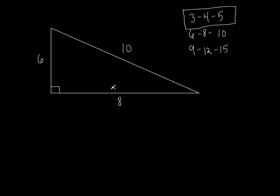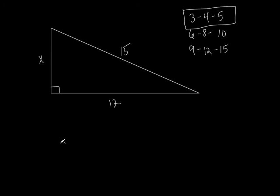That is very helpful for tests like the SAT or other college and military entrance exams. If they give you sides of 15 and 12, instead of doing the whole Pythagorean theorem, you recognize that three goes into 15 five times and into 12 four times — that's a three-four-five triangle scaled by three, so the missing side is nine. Much quicker.